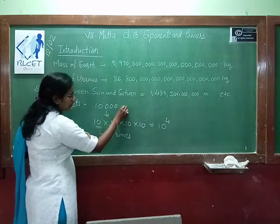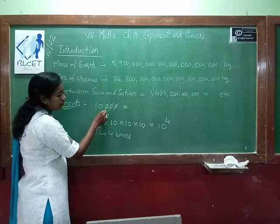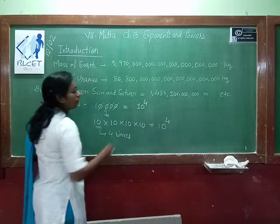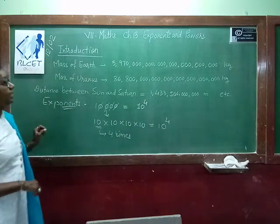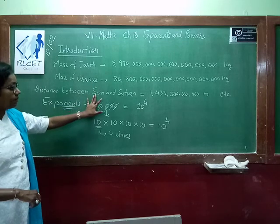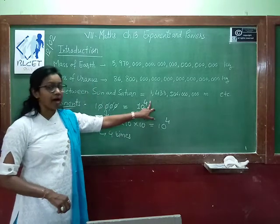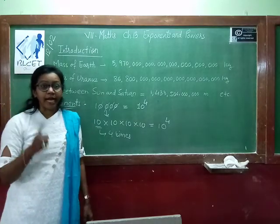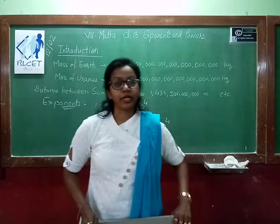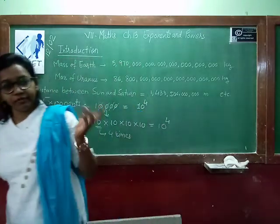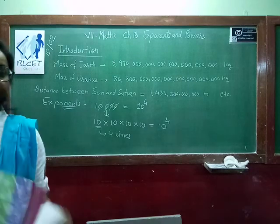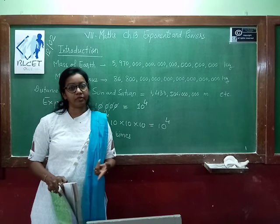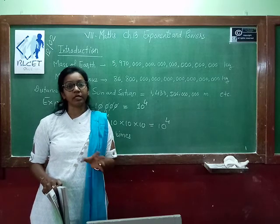Or directly if you want to write, you count the zeros: 0, 1, 2, 3, 4 — so we write 10 power 4. It is now easy to represent this number in terms of power. You count how many zeros are there, and that much power you write as the exponent. This is how we represent bigger numbers in exponent form and how we can read them.